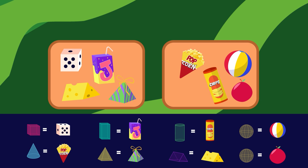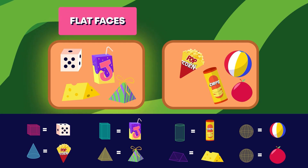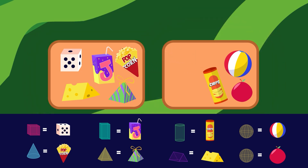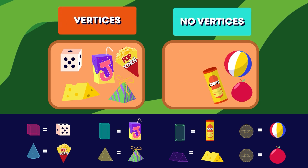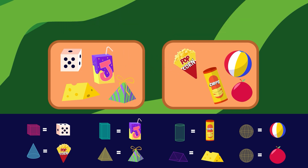I sorted the 3D shaped snacks into picnic baskets. Can you see how I sorted them? I sorted shapes with only flat faces in this basket, and all of the shapes with some curved faces in this one. We can sort the shapes in other ways too — like vertices or no vertices, square faces or no square faces, shapes that stack and shapes that roll.